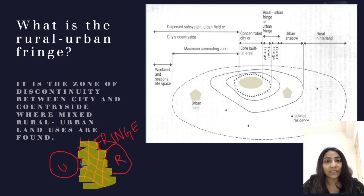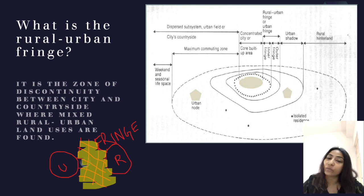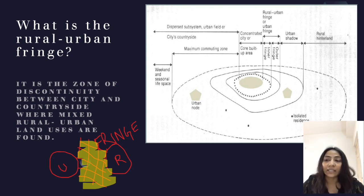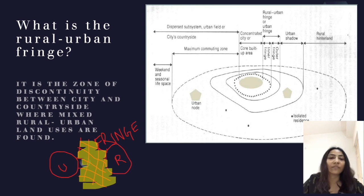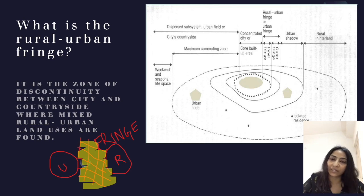The rural-urban fringe can be divided into inner fringe and outer fringe. The area just outside the core built-up area is known as the inner fringe, and after the inner fringe we have the outer fringe area.